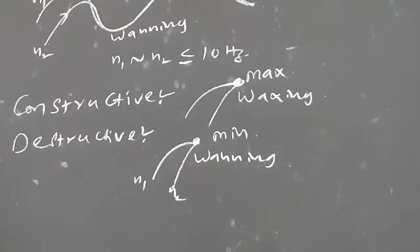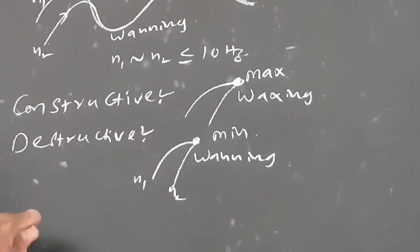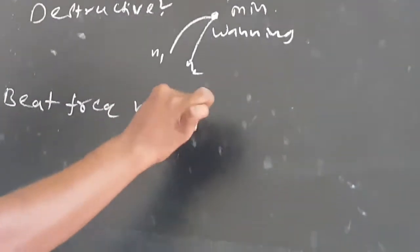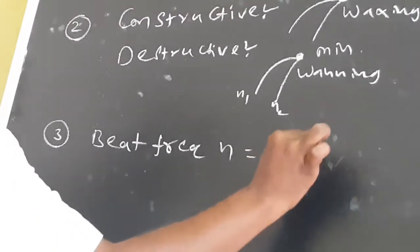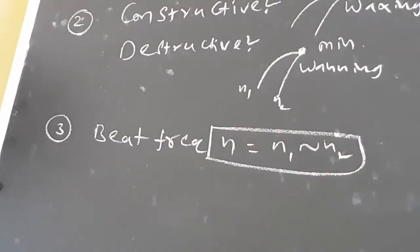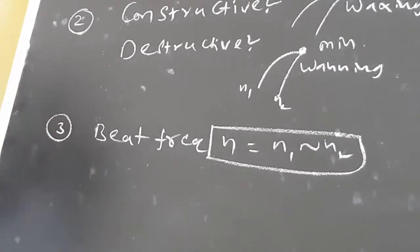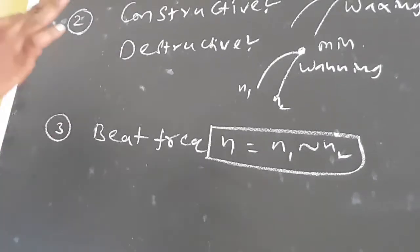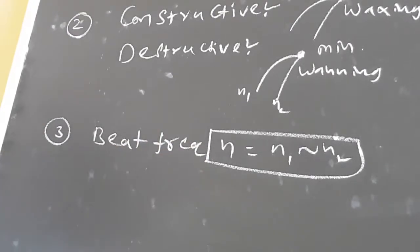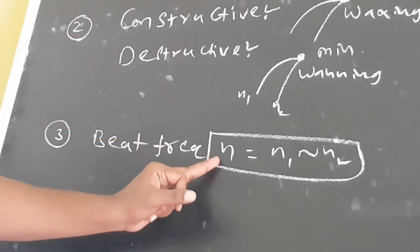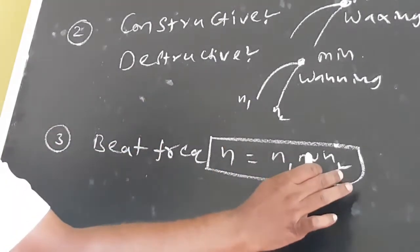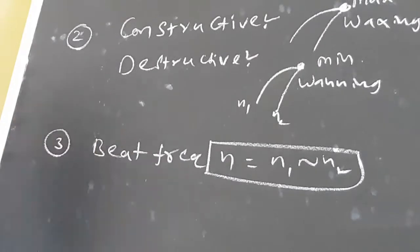The third concept is beat frequency. The formula is N equal to |N1 minus N2|. This is an important two-mark formula. The definition of beat frequency is: the number of beats heard in one second. N1 and N2 are the frequencies of the two sound waves.